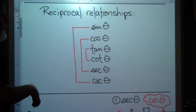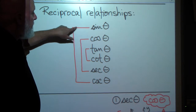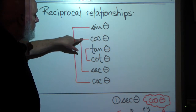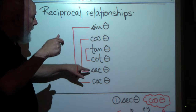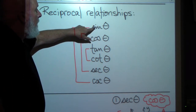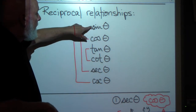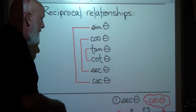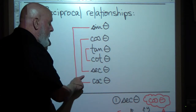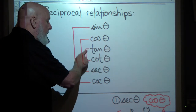Here are reciprocal relationships that we learned way back when we first talked about trigonometric ratios. The sine is the reciprocal of the cosecant — flip it over and you get the other. The cosine is the reciprocal of secant, and the tangent is the reciprocal of cotangent. So wherever the sine is positive in a given quadrant, the cosecant is also positive. Wherever the cosine is positive, so is secant. And if the tangent is positive in a given quadrant, so is the cotangent.